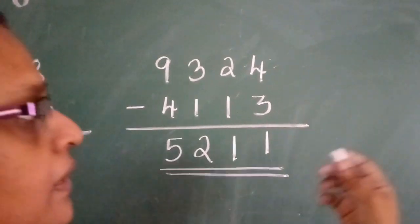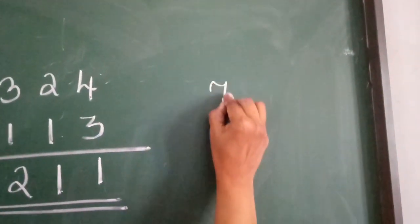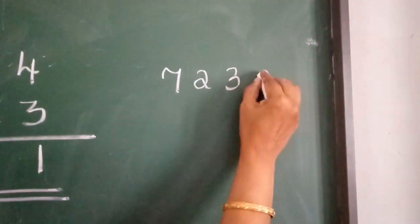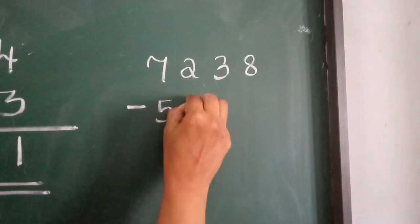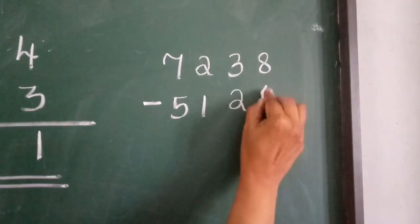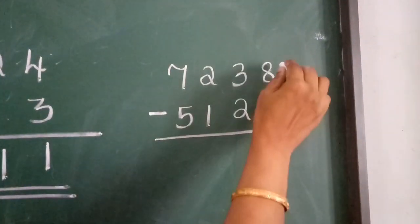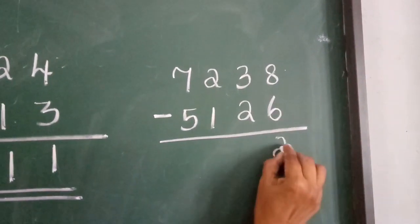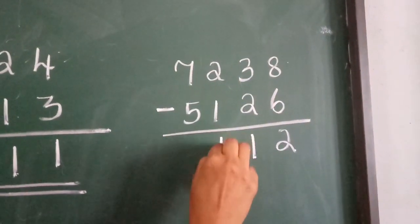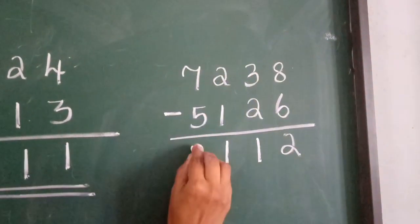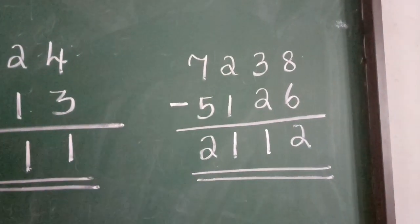Just one more sum without borrowing: 7,238 minus 5,126. How do you subtract? Again, it is worked from the right. 8 minus 6 equals 2. 3 minus 2 equals 1. 2 minus 1 equals 1. 7 minus 5 equals 2. So, the answer is 2,112.